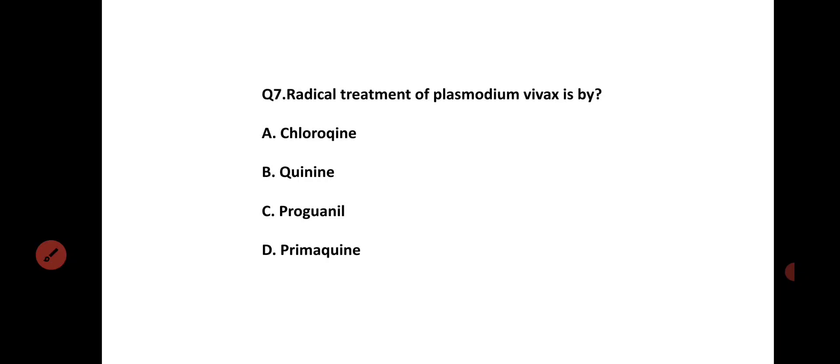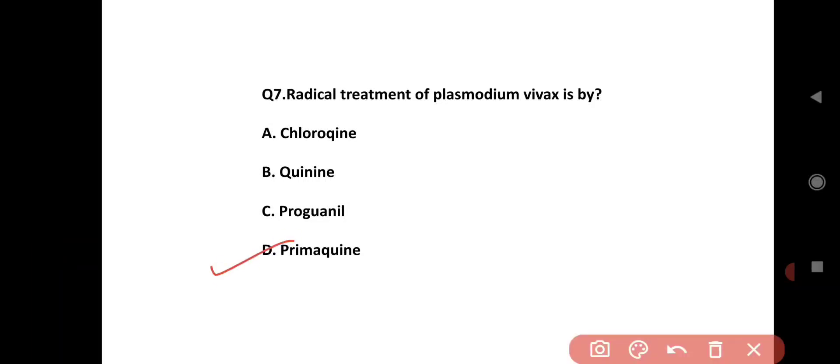The radical treatment of Plasmodium vivax is by: Option A is chloroquine, Option B is quinine, Option C is proguanil, Option D is primaquine. The correct answer is Option D, primaquine.